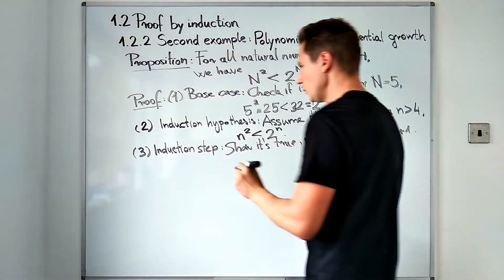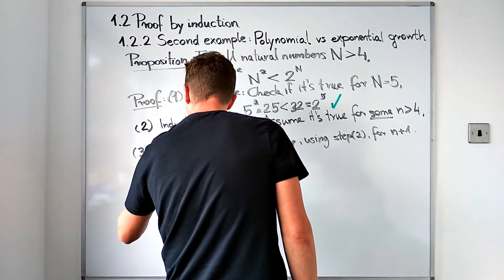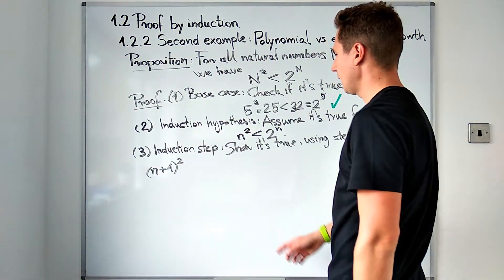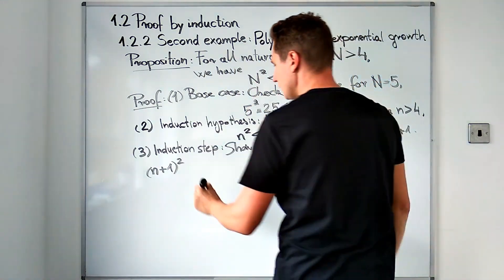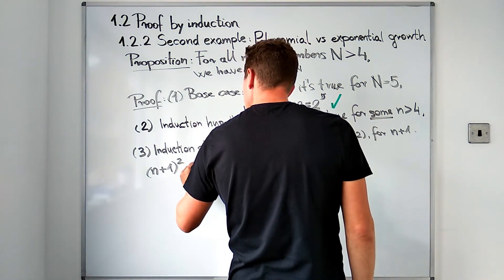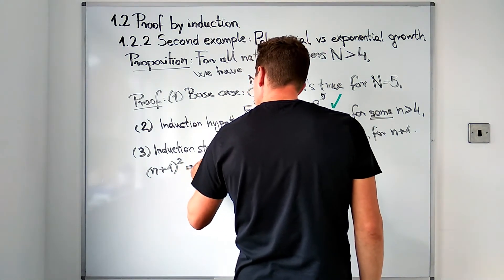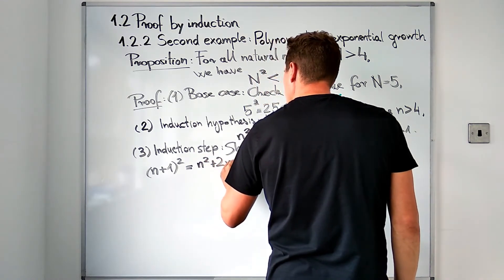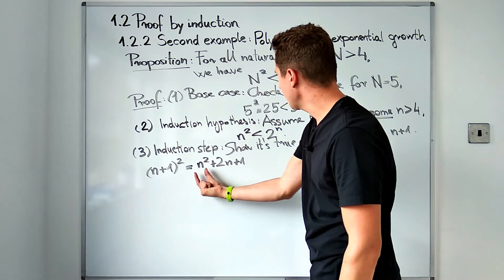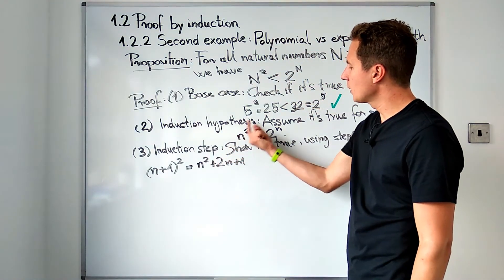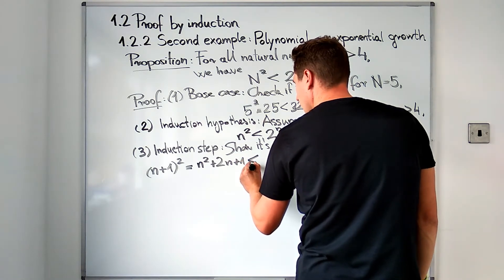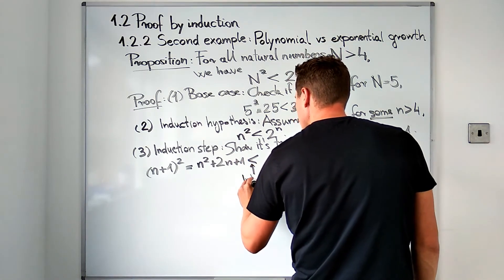Let's do that. We'll start on the left-hand side of the claimed inequality for n plus 1. That is (n+1) squared. If we expand this square, we get n squared plus 2n plus 1. Now we recognize in the first term the left-hand side of the inequality that we have assumed.